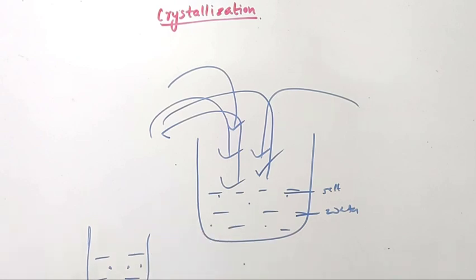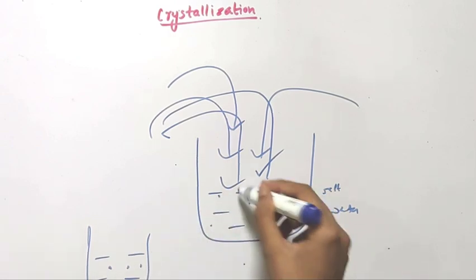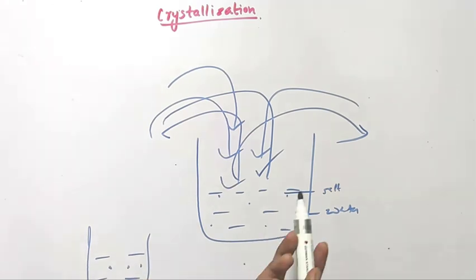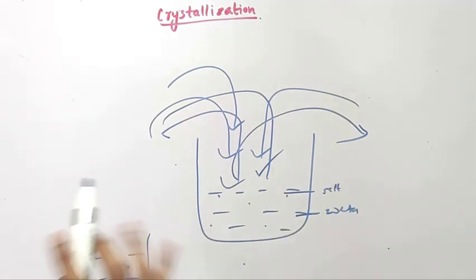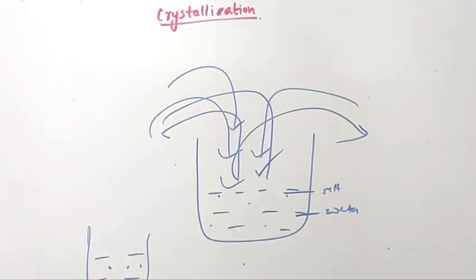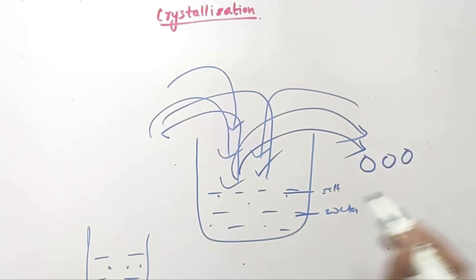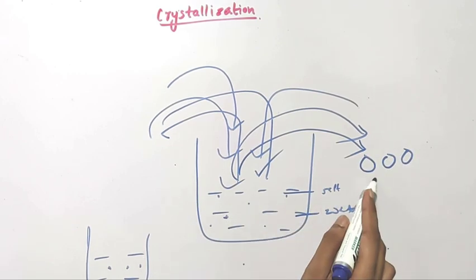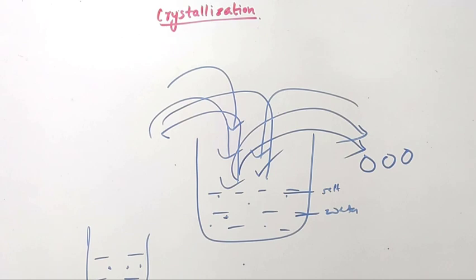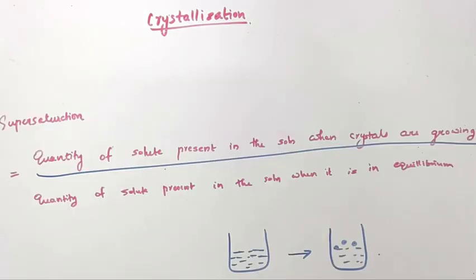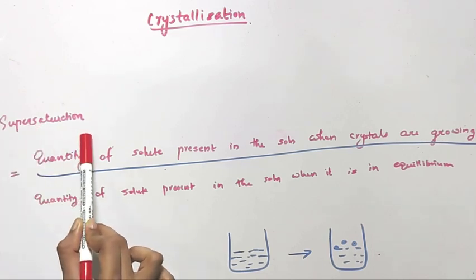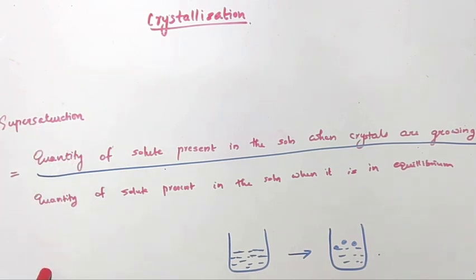So our solution will try to regain its equilibrium by removing the extra amount of salt that was added after the saturation stage. This extra amount of salt is removed by precipitating it out as crystals. That is, crystals are formed from our solution, and this process is called crystallization. We have understood that supersaturation is the reason for crystallization, and therefore supersaturation is considered the driving force for crystallization.